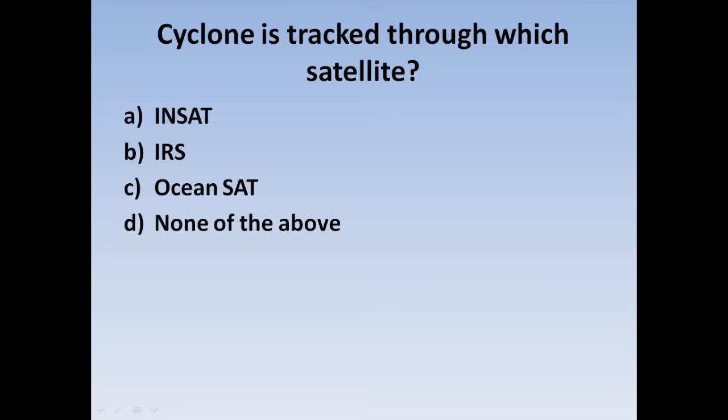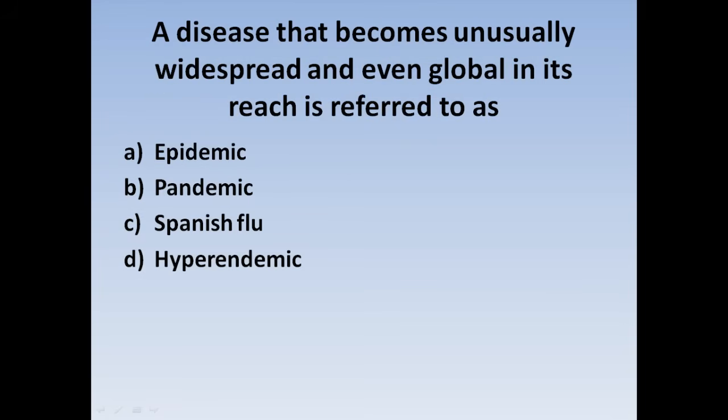Next question: Cyclone is tracked through which satellite? Option A: INSAT, Option B: IRS, Option C: OCEANSAT, Option D: None of the above. Correct answer: Option A, INSAT. Cyclones are tracked through the INSAT satellite.